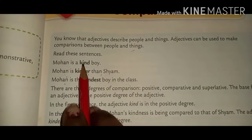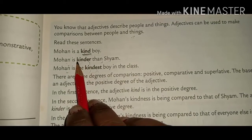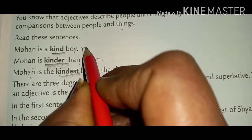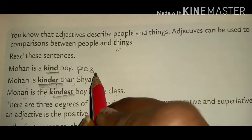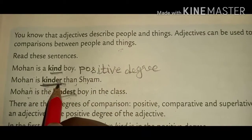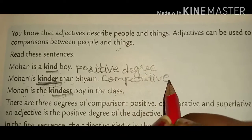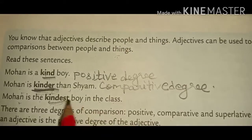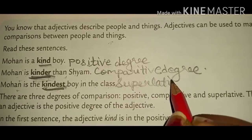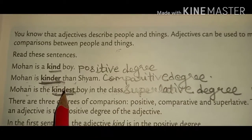These were the examples: kind, kinder, kindest. This was positive degree, this is comparative degree, and this is superlative degree. In positive degree, there is no suffix; in comparative degree, 'er' is added; and in superlative degree, 'est' is added. These are the examples of the three forms of degree.